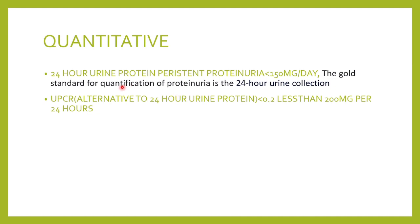An alternative to the 24-hour urine protein test is the urine protein-creatinine ratio. It is a very simple test done on a spot urine sample, causing no inconvenience to the patient, and gives correct results. If the protein-creatinine ratio is less than 0.2, it is normal — meaning protein excretion is less than 200 mg per 24 hours. These are the quantitative methods to measure urinary proteins.